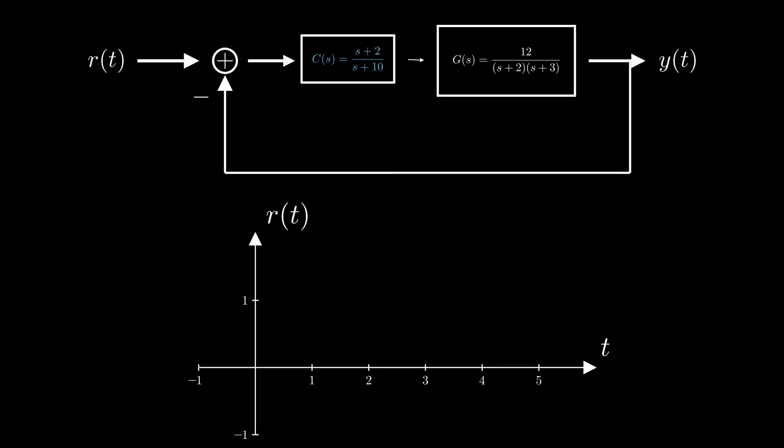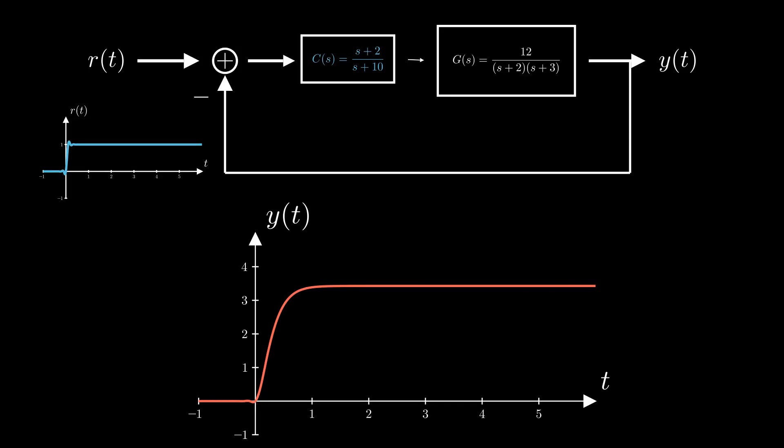When a step input is introduced to our new system, the output y(t) will take the form as follows. The system now has no overshoot indicating improved performance.